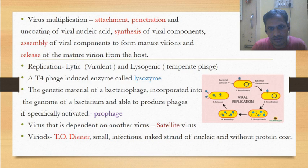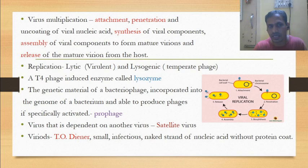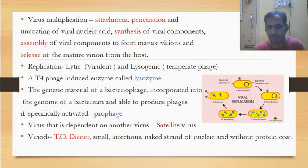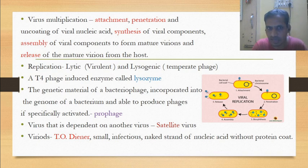Virus multiplication involves 5 steps, as shown in the diagram in the PPT. First, they attach to the host. Second, they penetrate and uncoat the viral nucleic acid. Third, they synthesize viral components. Fourth, there is assembly of viral components to form a mature virion. Finally, the mature virion is released from the host. This sequential cycle may be asked in TRB exams.